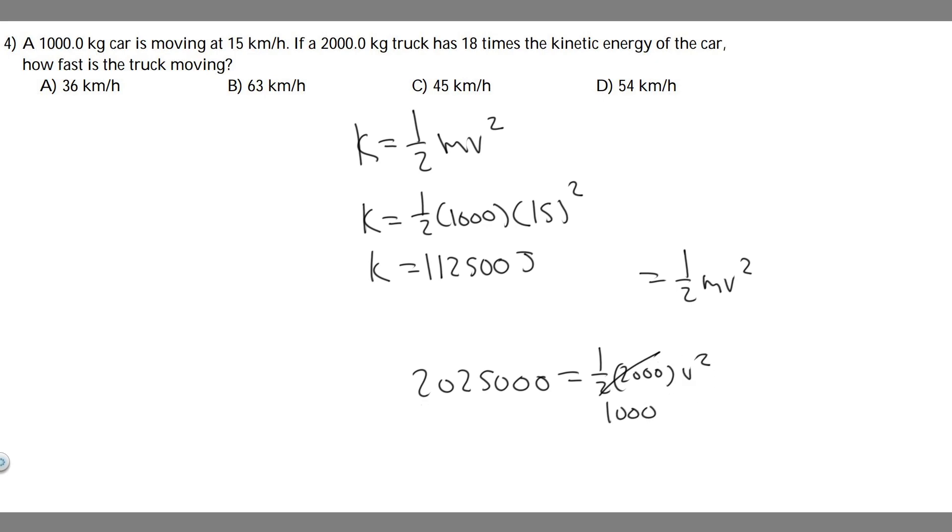Solving for v, you divide both sides by 1,000, and then you take the square root. So your answer is going to be the square root of 2,025,000 divided by 1,000.